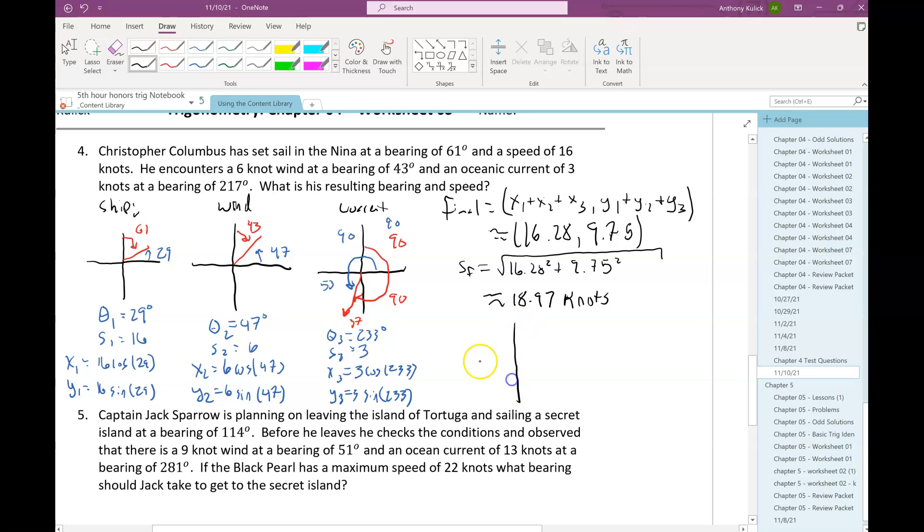The last thing I need to do is calculate my bearing. So if I plot this point, 16.28, 9.75, that's going to be somewhere in the first quadrant, right? Agreed? Yes. So this is the bearing that I'm looking for. This is my alpha. If I counter on my bearing, 0 starts there, so this is 90.